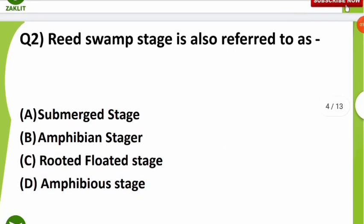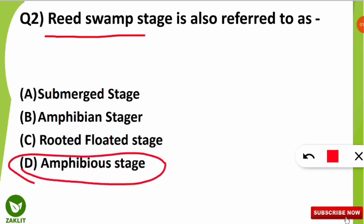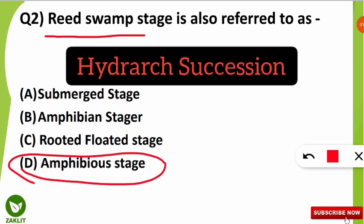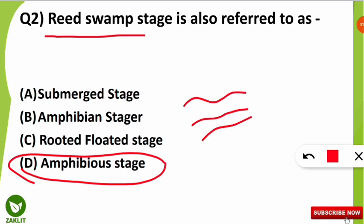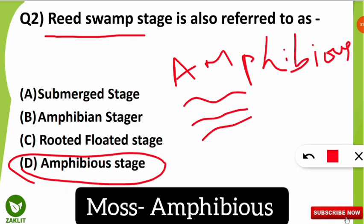The second question was: the reed swamp stage is also referred to as what? This question was from ecological succession. The reed swamp stage is also known as the amphibious stage. This stage is seen in the case of hydrarch succession — succession which begins in water — and it occurs in shallow water, characterized by the presence of amphibious plants, which have adaptations for both land and water. An example is mosses.